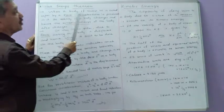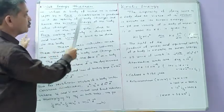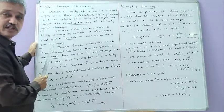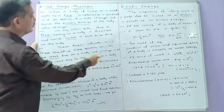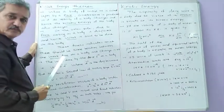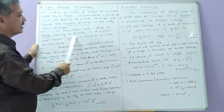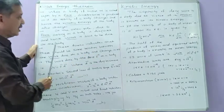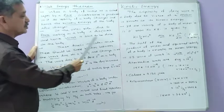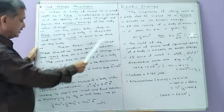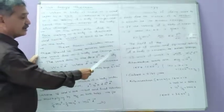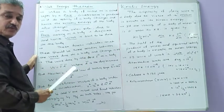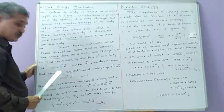When a body of mass M is acted upon by a force, acceleration is produced in it. Acceleration means change in velocity, so the velocity of the body changes and consequently the kinetic energy of the body also changes. On the other side, due to the force acting on the body, it undergoes displacement, and force into displacement gives the work done on the body. These two facts indicate there should be some relation between the work done on a body and the change in kinetic energy.